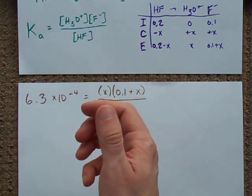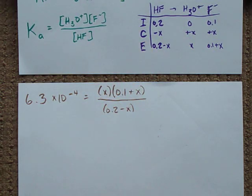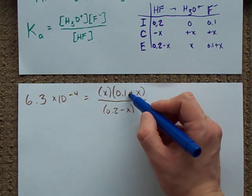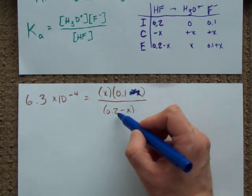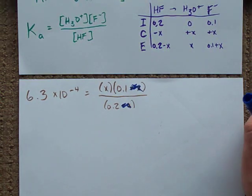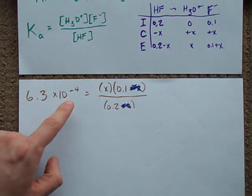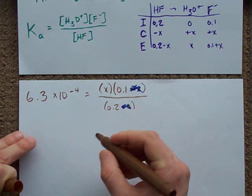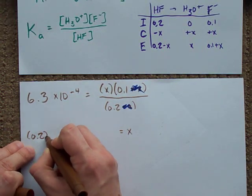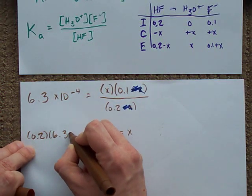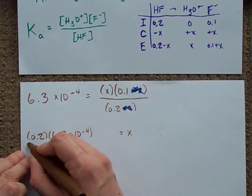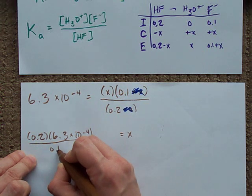I'm gonna make an assumption, because this is a pretty small number. I'm gonna assume that X is small relative to each of these numbers. I'm gonna try to cancel them out. We'll see if that assumption holds up later. How do I solve for X? I have to undo division by 0.2 - we undo division with multiplication. And we have to undo multiplication by 0.1, so we divide by 0.1.